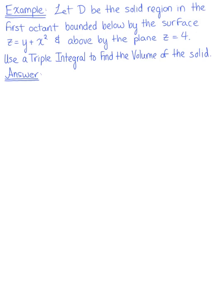Let D be the solid region in the first octant bounded below by the surface z equals y plus x squared, and above by the plane z equals 4. We want to use a triple integral to find the volume of this solid, so we need the bounds on this region.